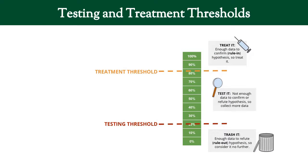Now let's look at our probability distribution of a differential diagnosis and cut it into three pieces. These three pieces fall into the same categories I talked about before: the trash it, the test it, and the treat it categories. This line is called the treatment threshold, and this is the testing threshold. If you pass the testing threshold, you need to do some tests. If you pass the treatment threshold, you need to treat the diagnosis. Depending on where the probability of your diagnosis falls, it determines what you're going to do.